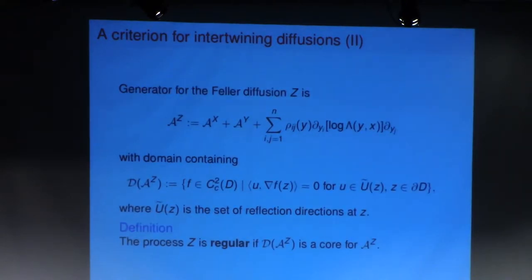Okay, and perhaps you can see it more clearly, the generator for this diffusion Z is simply I evolve X, I evolve Y, and then I evolve Y a little bit more because I'm trying to couple the two processes.